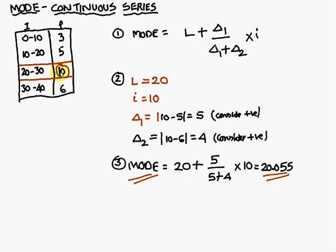Δ₁ is the highest frequency minus the preceding frequency, and Δ₂ is the highest frequency minus the post frequency. Substitute all these values into the formula to get the mode of the distribution. Thank you.